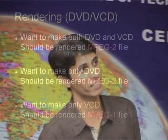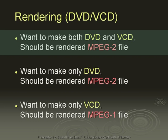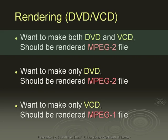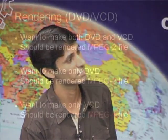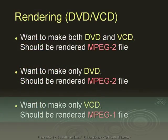Suppose you want to render both DVD quality and VCD quality video. Some people render MPEG-1 first, then render MPEG-2 — MPEG-2 for DVD and MPEG-1 for VCD. Avoid this. You should render only MPEG-2. The burning software will convert MPEG-2 to MPEG-1 for VCD automatically, so there is no need to separately create an MPEG-1 file. Render only the MPEG-2 file. If you want to make only a DVD, render MPEG-2. If you want to make only a VCD, render MPEG-1.